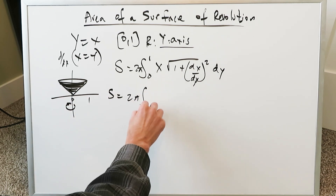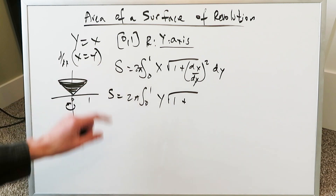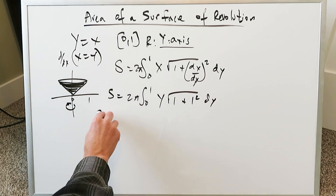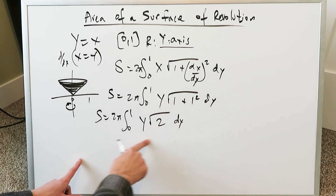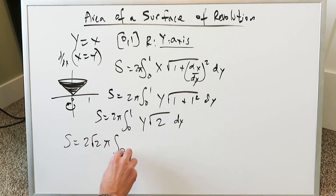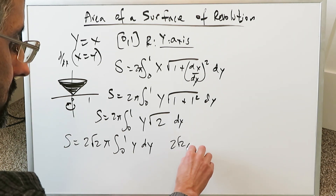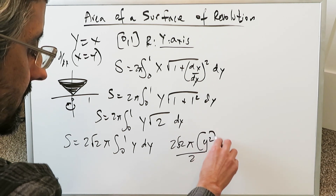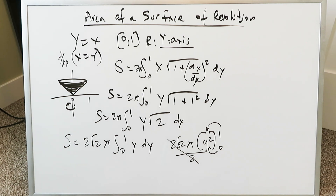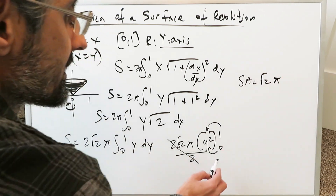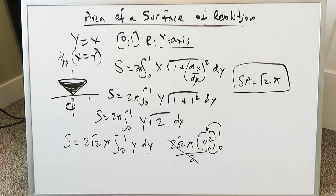The surface area of this solid: you'll have 2π, 0 to 1. The x equation is really a y. You have 1 plus dx over dy, which I showed you was equal to 1 — 1 squared is just 1. Bringing everything into better form, you're looking at a √2 inside, so √2 can come out as a coefficient. You're looking at 2√2 π, from 0 to 1, y dy. The antiderivative of y gives y²/2. You have 2√2 π times y²/2, evaluated from 1 to 0. The 2s cancel out. Substituting 1 and 0, the difference is just 1. You end up with a surface area of √2 π square units.